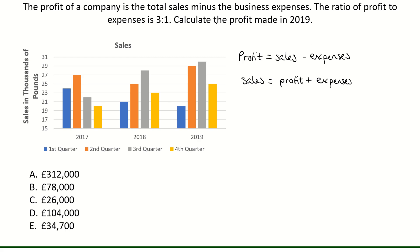So we want to calculate the profit, so we are going to need to find a section of the sales that represents the profit. The ratio of profit to expenses is 3 to 1. Now we have the total sales, so the total sales will be the three parts plus the one part for expenses. So our sales is represented by 3 plus 1, which is 4 parts.